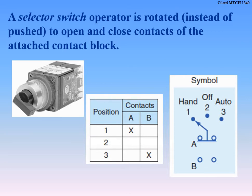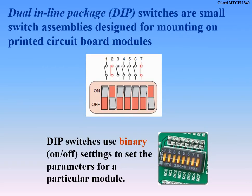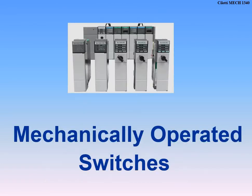Manually operated switches include push buttons: green is typically a normally open start button, and red is a normally closed stop button because pushing it must break the circuit to stop things. There are also selector switches — on the 870 trainer we have manual, auto, and reset positions. A selector switch in auto lets everything run freely; in manual, you step through each stage manually. DIP switches (dual inline package) are just binary switches sending strings of zeros and ones.